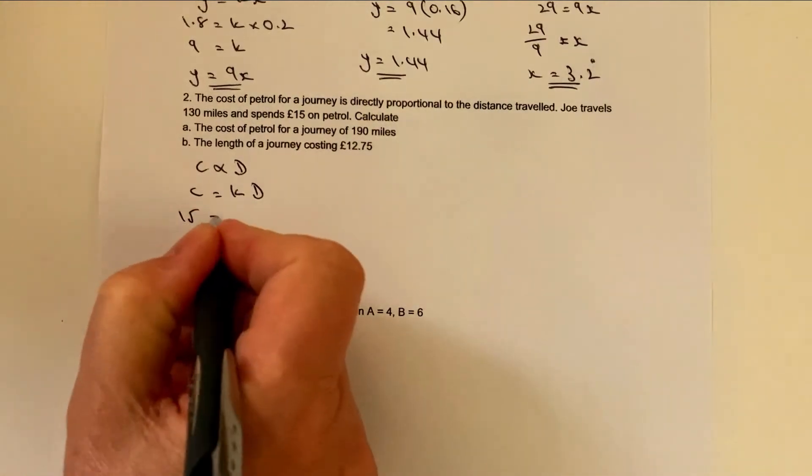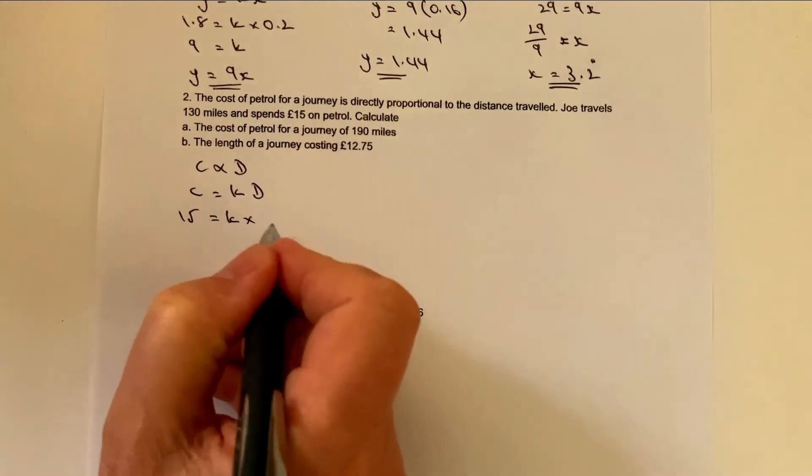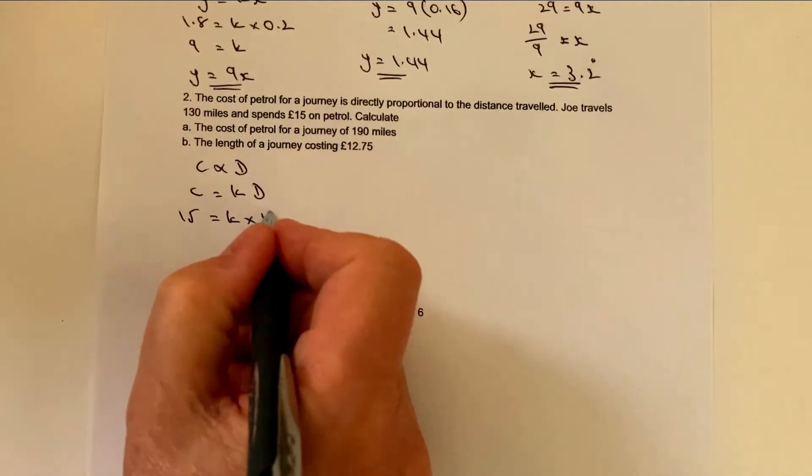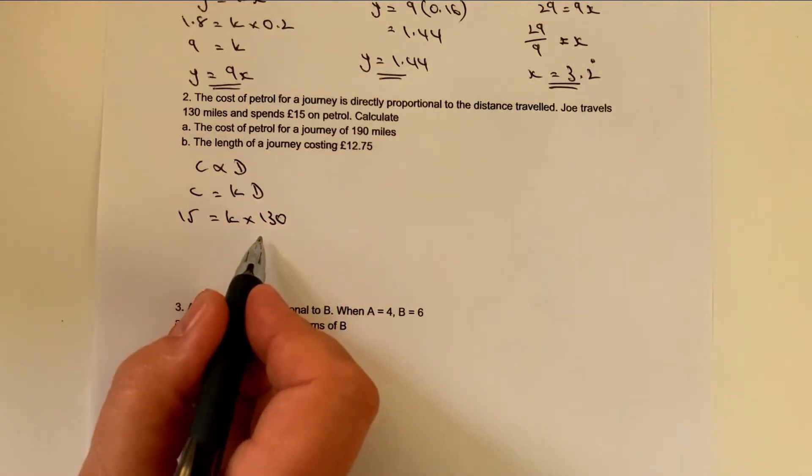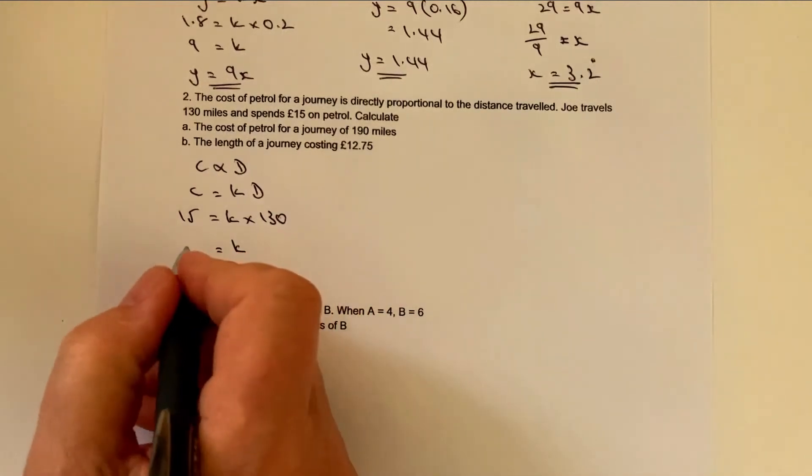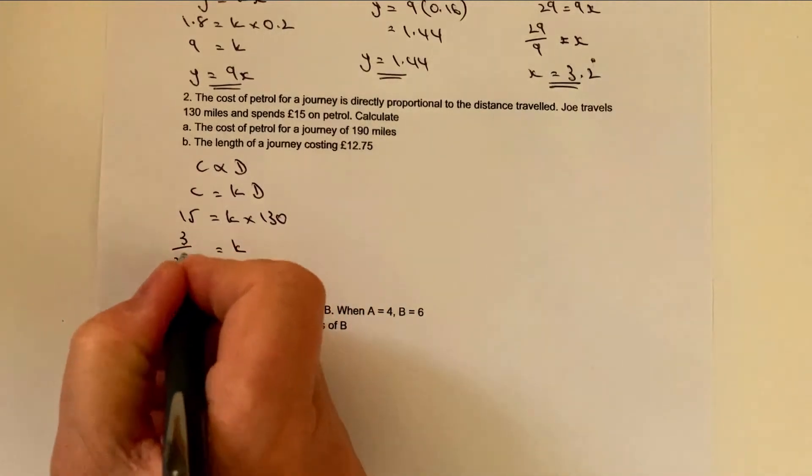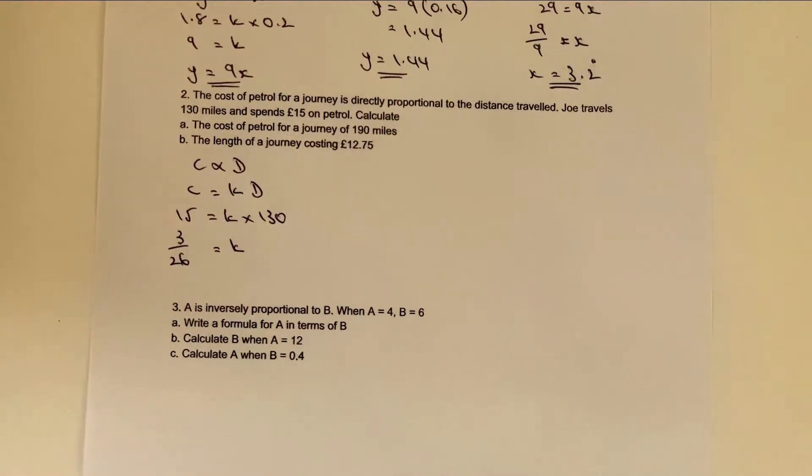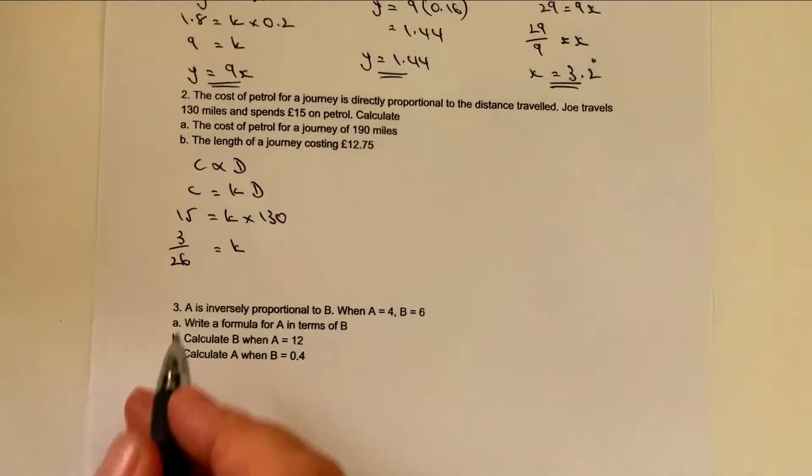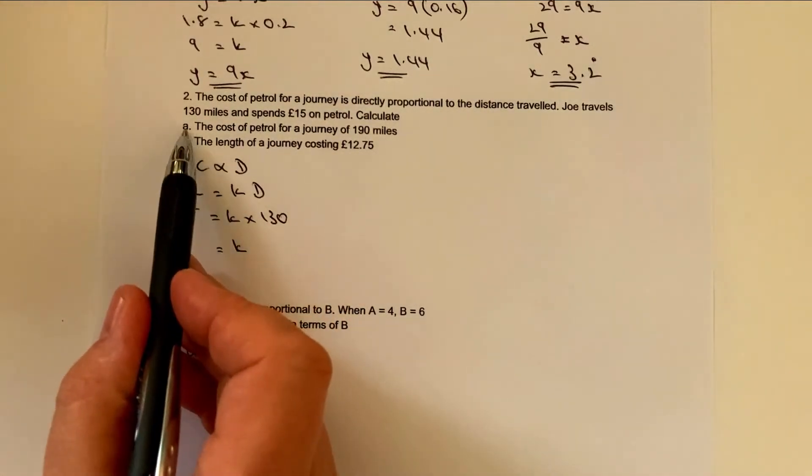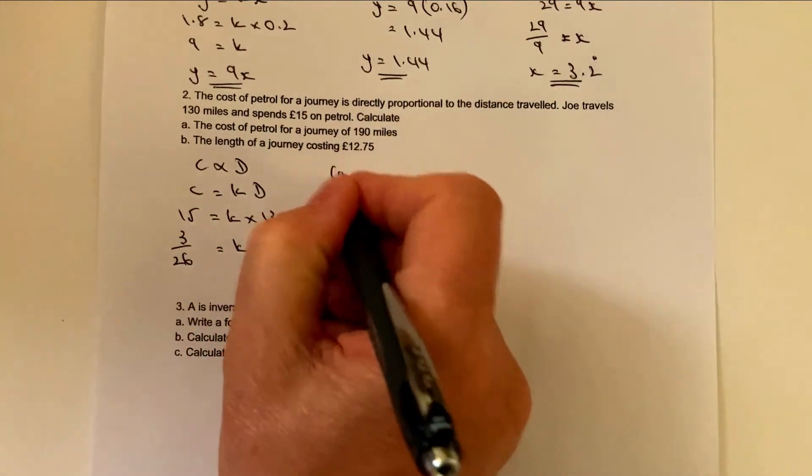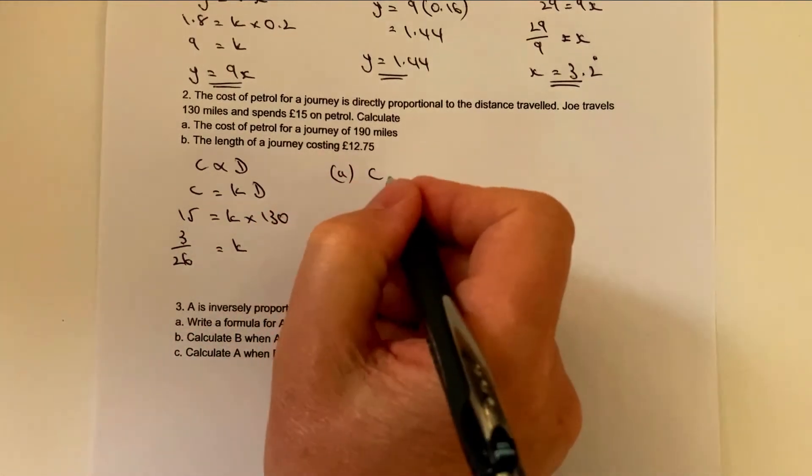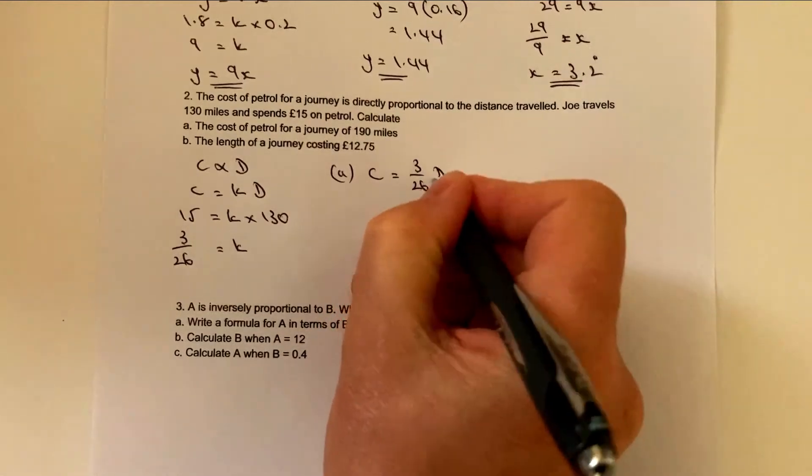Very similar to the way we did this in the first question, y equals kx, I'm going to write cost equals k times distance. Because of the information I've got, which is Joe travels 130 miles and spends £15 on petrol, I can use that information to work out the value of k. So I can say £15 in fuel equals k times 130 miles. If I divide both sides through by 130, I get k equals 3 over 26.